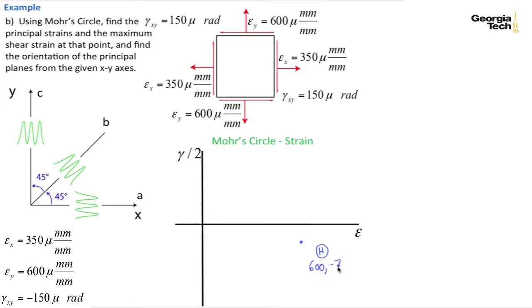And for my vertical face, I've got 350 positive, because it's in tension. The shear strain is going to cause counter-clockwise rotation, so it's positive by my shear convention. I use half of 150 again, so I'm going to go 350, and then up 75, and that's my vertical face.